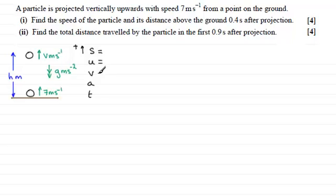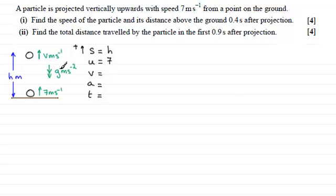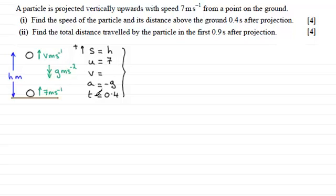Do we know these values? Well, we know some of them. For S, the displacement starting from here, taking upwards as positive, is H. U, the initial velocity, is positive 7 because it's in the positive sense. V is what we're trying to find. A, the acceleration, acts downwards, so that's going to be minus g. And the time T is 0.4 seconds. I need to get an equation with just U, V, A, and T, since I don't know S yet.